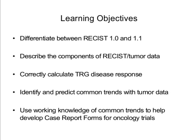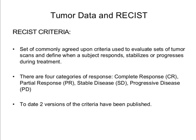Our goal is really to have everything as consistent as possible, and the way we can really assist in consistency and uniformity is to make sure that we have everything described in a clear and detailed protocol. In the real world, sometimes that's impossible, or we think it's clear to us and then it gets out on site — it's pretty amazing what the interpretations are. The RECIST criteria are a set of commonly agreed upon criteria used to evaluate sets of tumor scans and define when a subject responds, stabilizes, or progresses during treatment.